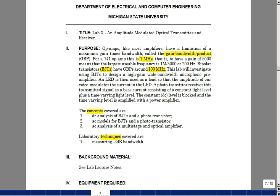The concepts that we covered in this lab are analysis of BJTs in a phototransistor, AC models, and then a multi-stage amplifier analysis, and an optical amplifier as a receiver. In the lab, we're going to learn how to measure the 3 dB bandwidth of an amplifier. And this is lab 10, an amplitude-modulated optical transmitter and receiver.